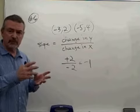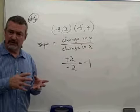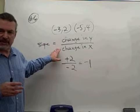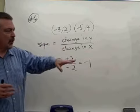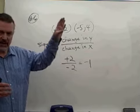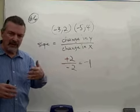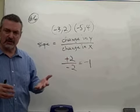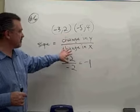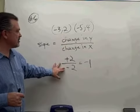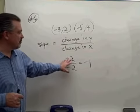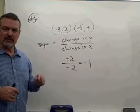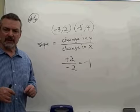So when you have two points and need to find the slope, think about what slope means: how did the Y change — how did the vertical change — while the X, the horizontal, was changing? If you think about those changes, put them into fraction form, and reduce the fraction, you'll have the slope of the line.